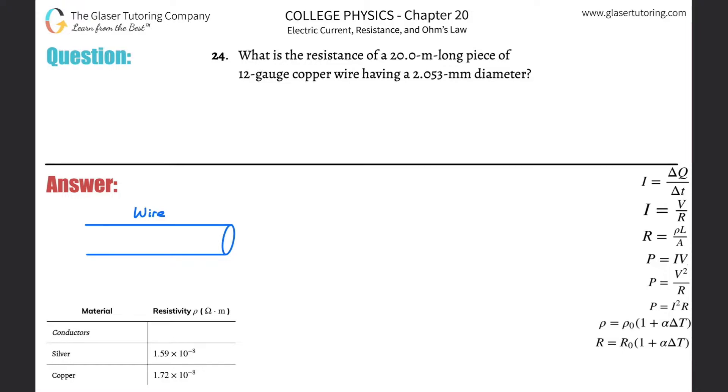Number 24: What is the resistance of a 20-meter long piece of 12-gauge copper wire having a 2.053 millimeter diameter? All right, so first thing I want to talk about is what's the basic idea behind resistance in a wire.